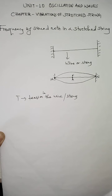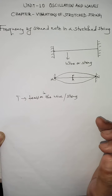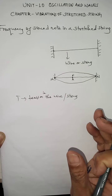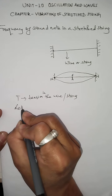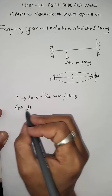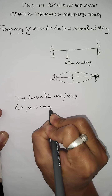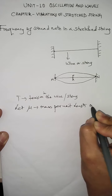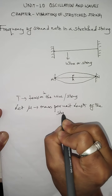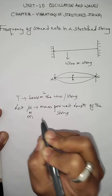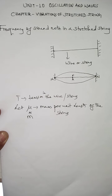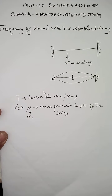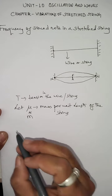Every string has a mass, and this mass depends upon the length — the more length, the more mass. That is why every string is characterized by a mass per unit length. We use the symbol mu (μ) for mass per unit length of the string. The symbol m can also be used, but we will use mu.